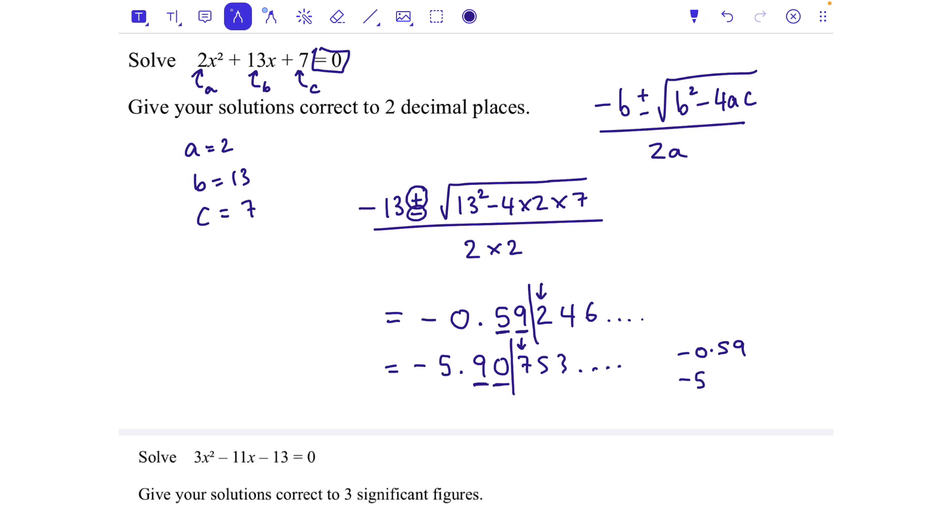Now what that actually means is that with a quadratic you've got two places where it's cutting the x-axis. We're up to two and one of them is minus 0.59 and one of them is minus 5.91. So that quadratic is coming down and going back up like that.